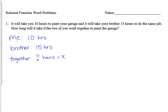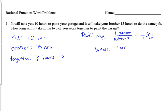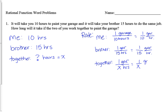To do these problems I need to think of how much of the garage I get painted every hour, so I need to convert these numbers into rates. The rate that I paint the garage is one garage in 10 hours, which means I paint one tenth of a garage for every hour that I work. My brother paints one garage in 15 hours, which means he paints one fifteenth of the garage every hour. Together, we want to paint one garage in x hours, so we paint one over x of the garage every hour.